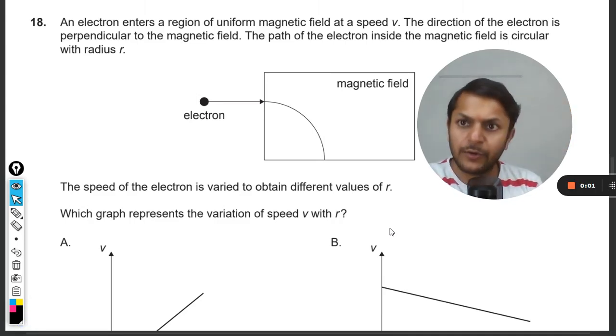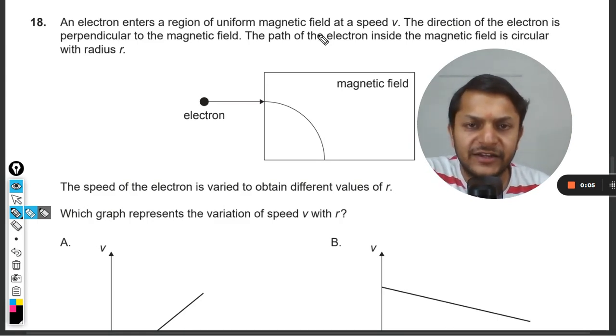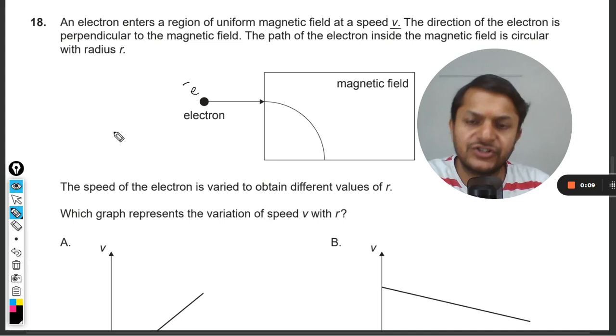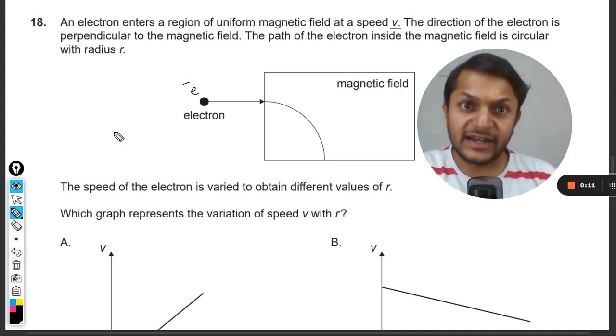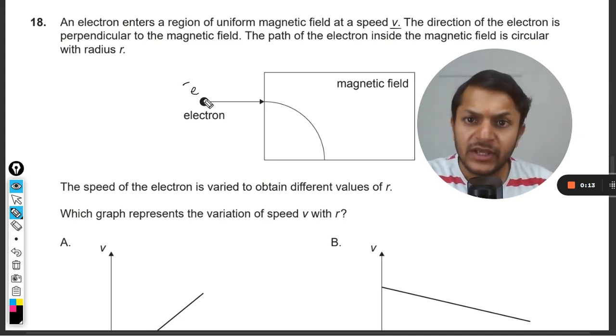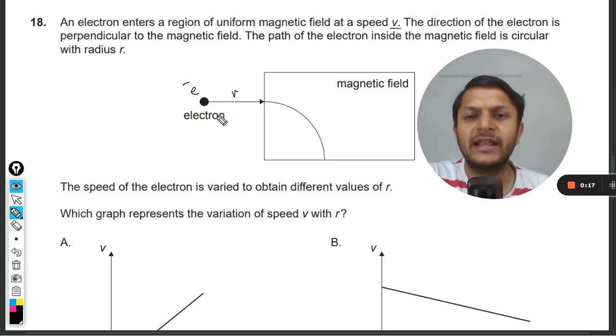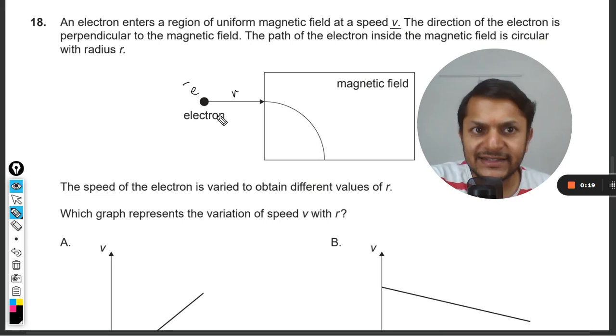Let us see what is there in this question. An electron enters a region of uniform magnetic field with velocity v. This is an electron, negatively charged, that enters into a uniform magnetic field with velocity v. The direction of the electron is perpendicular to the magnetic field. The path of the electron inside the magnetic field is circular with radius r.